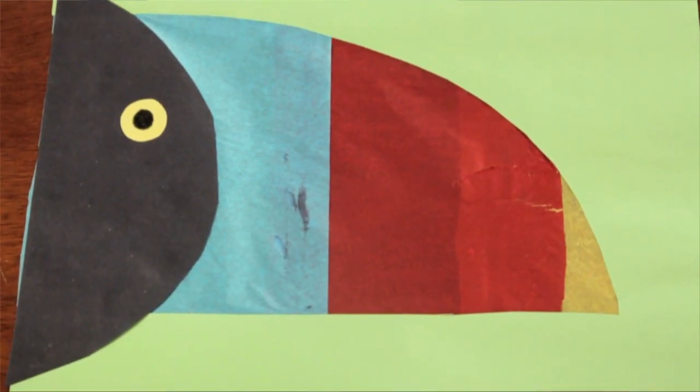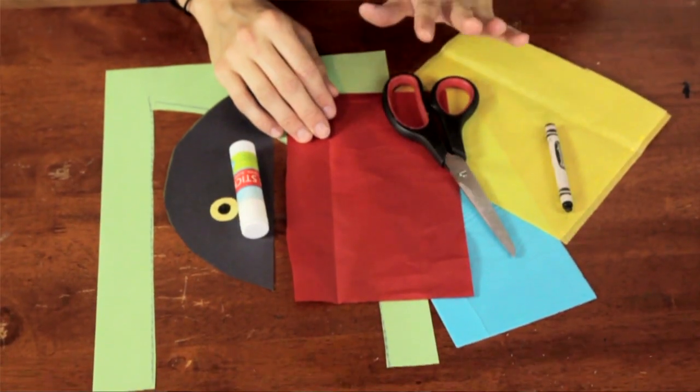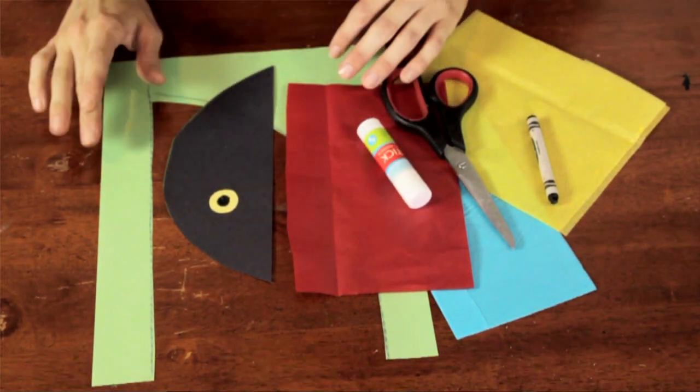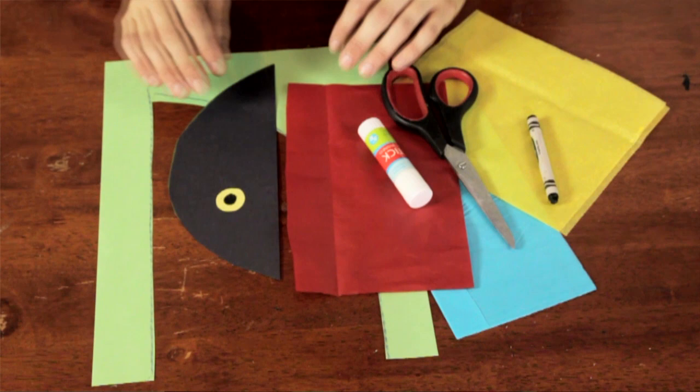You're going to need some tissue paper. I've got three colors here: yellow, blue, and red. You're going to need a pair of scissors, a black crayon, a glue stick, and you'll need some green construction paper, some black construction paper, and also some yellow.